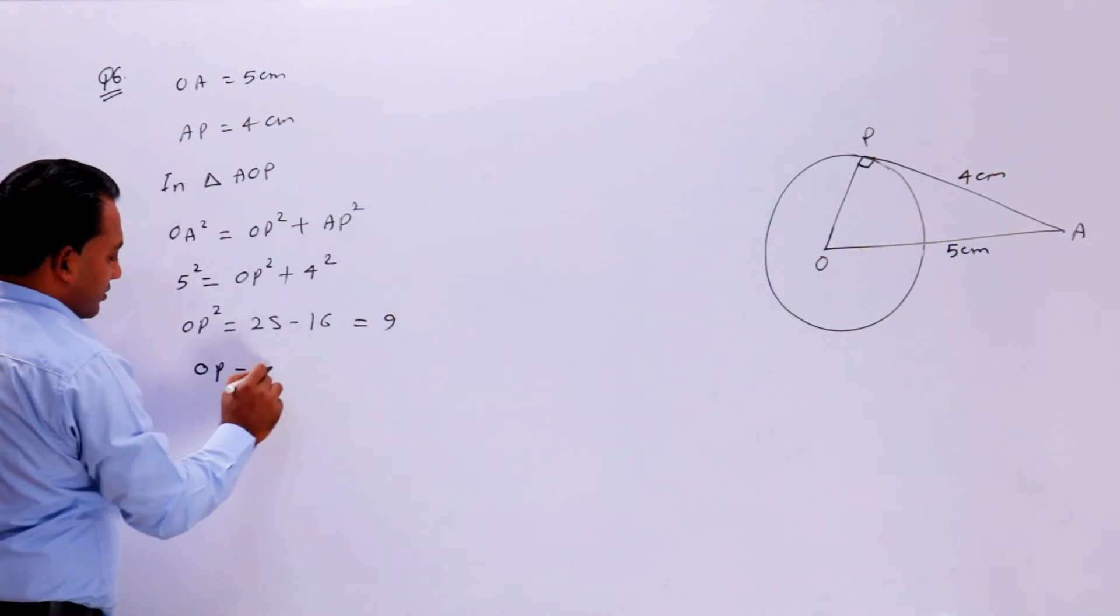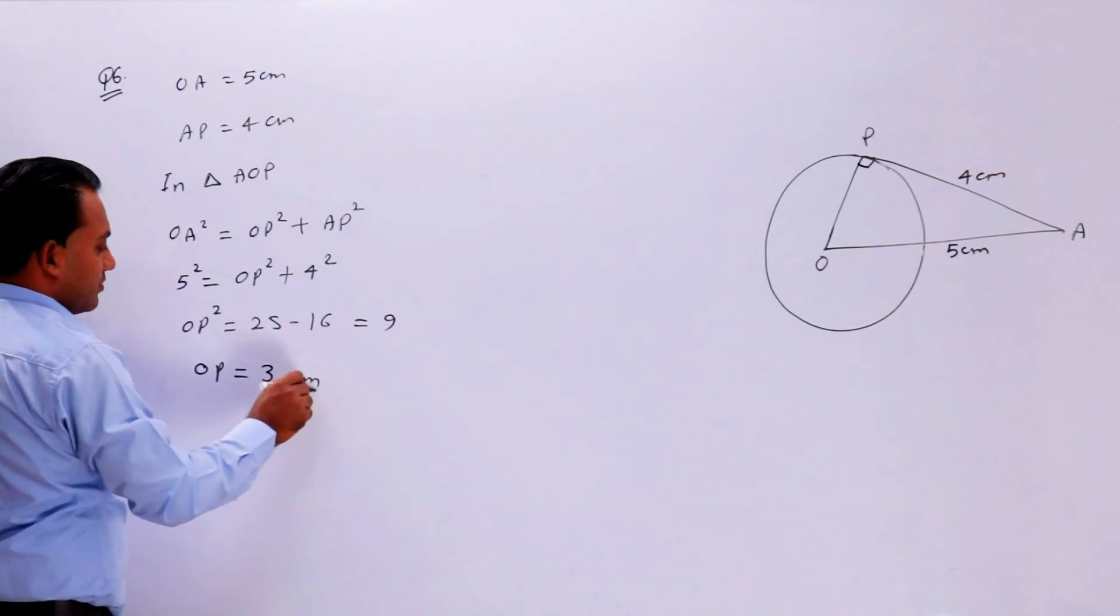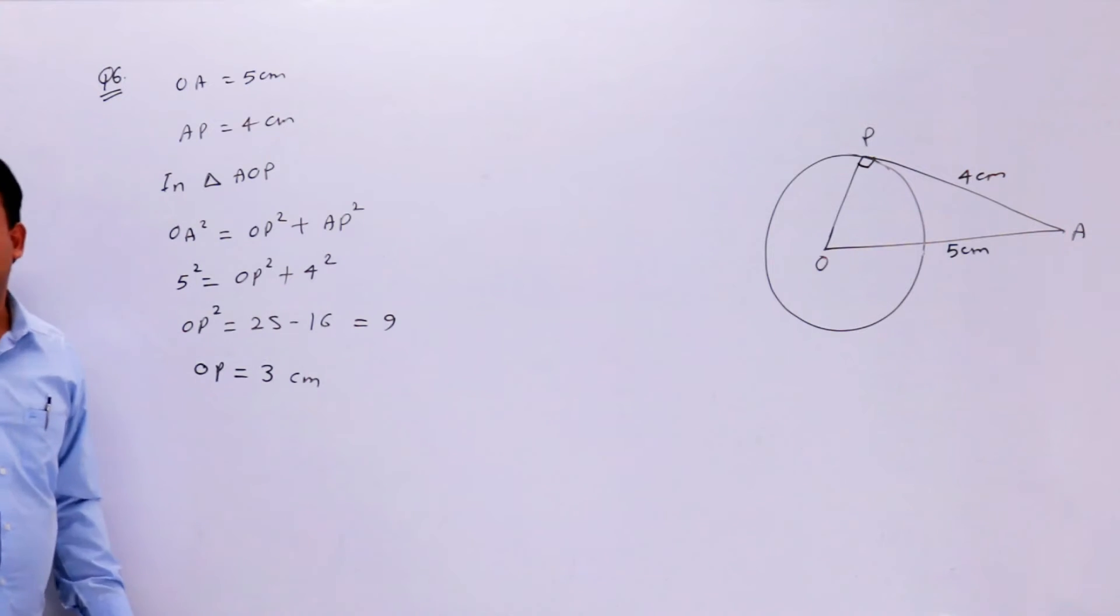OP is equal to square root of 9, which is 3. This is 3 centimeter. The circle radius is equal to 3.